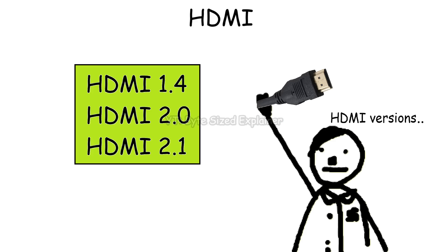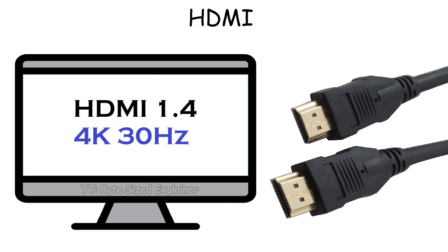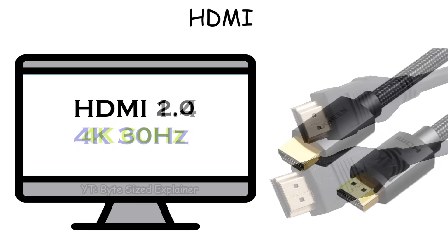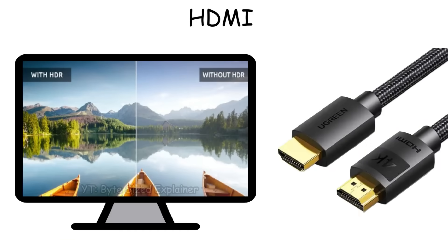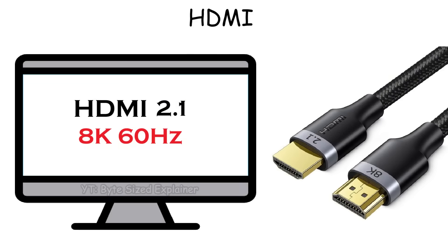HDMI has many versions, but the ones worth knowing are HDMI 1.4, HDMI 2.0, and HDMI 2.1. HDMI 1.4 supports 4K resolution but with only a 30Hz refresh rate. HDMI 2.0 raised that to 4K at 60Hz and also supports HDR. And the upgraded version, HDMI 2.1, can handle 8K at 60Hz or 4K at 120Hz.